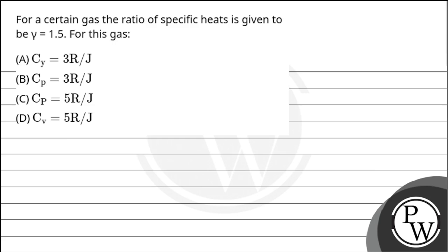Hello, let us read the question. The question says for a certain gas, the ratio of specific heats is given to be gamma equals to 1.5. For this gas,